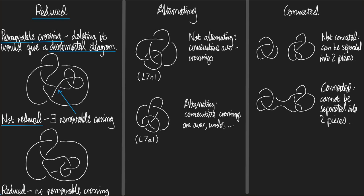On the other hand, this diagram below it is reduced — you can check each crossing one by one and none of them is removable. If you're feeling keen, pause the video and think: what is the relationship between the second diagram and the first? The answer is that I got the second diagram from the first by removing the removable crossing. I look at one side of the removable crossing, pick up that piece and rotate it 180 degrees, and put it back down — that removes the removable crossing.